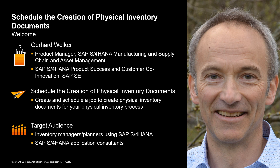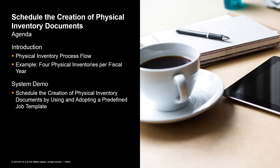In this video you will learn how to create and schedule a job to create physical inventory documents for your physical inventory process. In the first part of this microlearning we will take a look at the physical inventory process flow in SAP S4HANA in general, and as an example we will look at the process with four physical inventories per fiscal year. In the second part we will schedule the creation of physical inventory documents by using and adopting a predefined job template in the SAP S4HANA system.